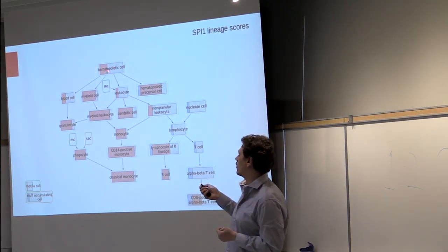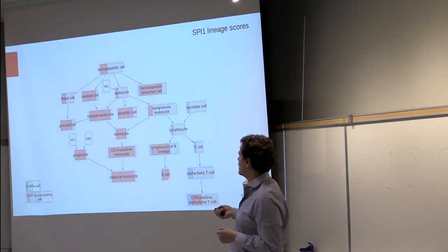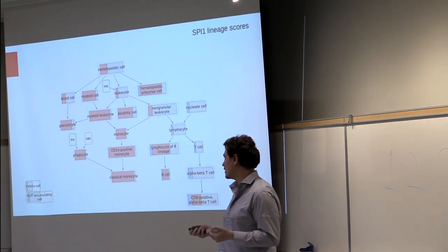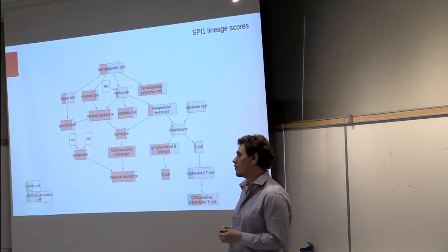So what you can see first is that for the majority of the hematopoietic cells, SPI1 is mainly defined as upregulated except for the T cell, which confirms what is known from the literature.